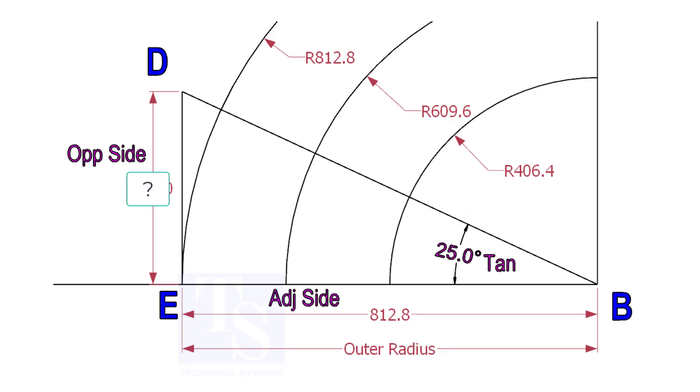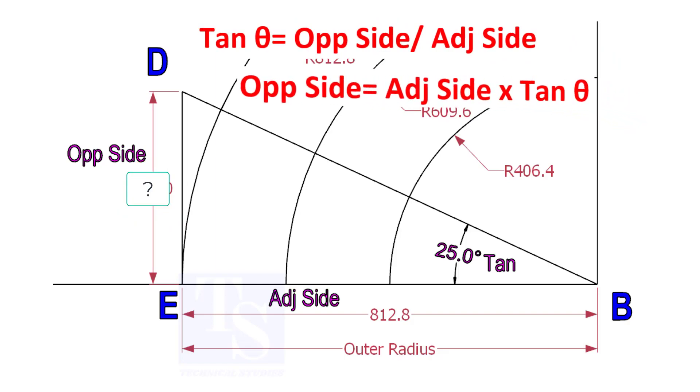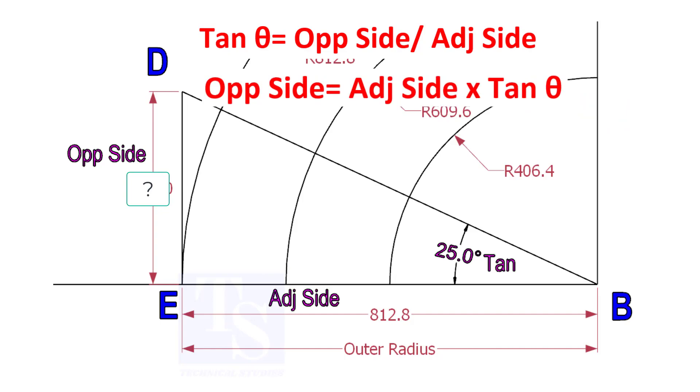To draw the line DB, we need to know the length of the line ED. To calculate ED, we need to apply the formula: tan theta equals opposite side divided by adjacent side. Opposite side equals adjacent side multiplied by tan theta.